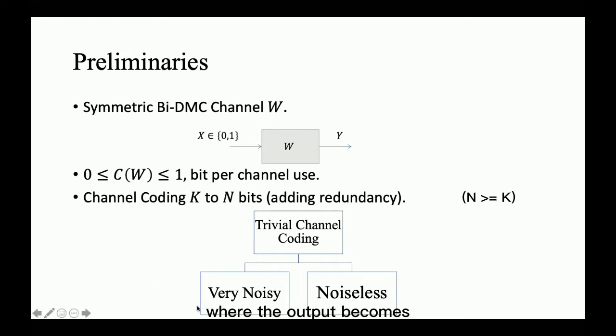where the output becomes completely independent of the input, and no matter how many parity bits or extra bits you add, you cannot convey information. The capacity of such a channel is zero.